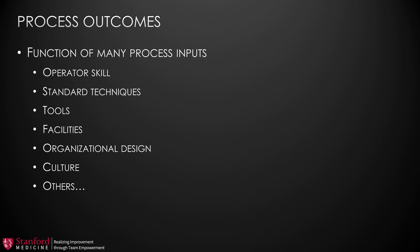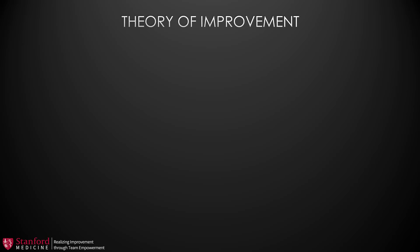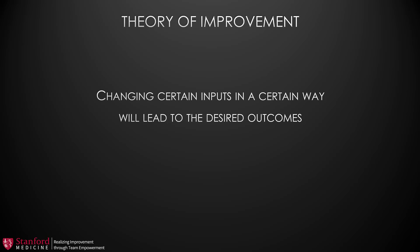That implies that we need to specify what outcomes we want and then understand how changing our inputs will affect those outcomes. Now, we don't ever know exactly how changes in our inputs will affect our outcomes. Hopefully, we have an idea, but until it's proven, it's still a theory. This, then, is our theory of improvement: that if we change certain inputs in a certain way, we believe that will lead to the desired outcomes.